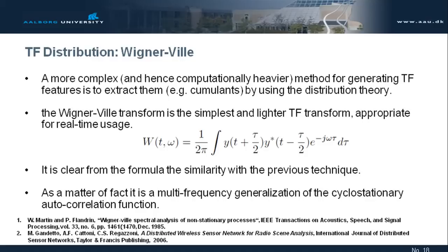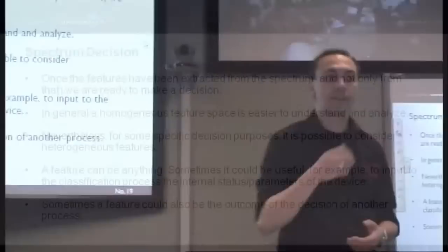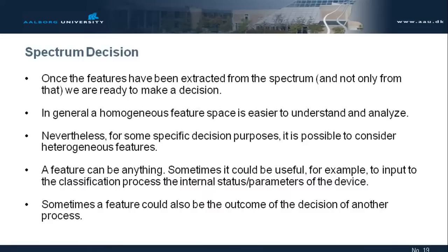We also managed to identify if they were combined or overlapping one on another. Once we have a feature, what do we do with it? Because we have numbers, we have a vector, we have some space domain representation. But what does it mean? You need to classify. No way out. You need to make a decision, and this decision is a classification.